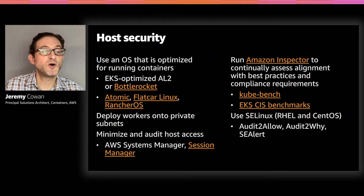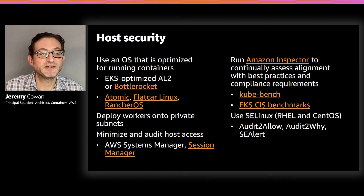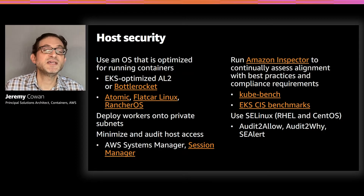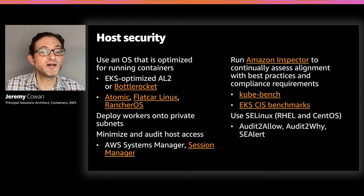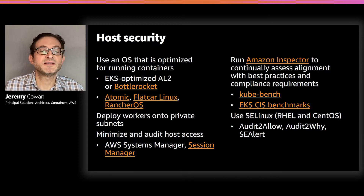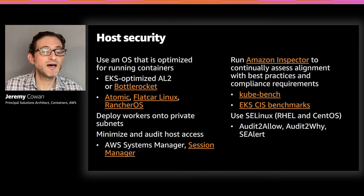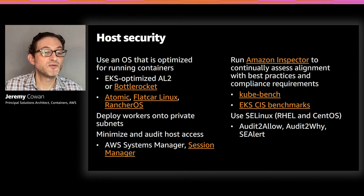Beginning with host security. The first recommendation is to use an operating system optimized for running containers — such as the EKS-optimized AMI or Bottlerocket, or another OS with additional hardening applied to improve your security posture. Bottlerocket is a new open source operating system from Amazon that includes features like DM Verity, a read-only root file system, Secure Boot, and SELinux — all aimed at mitigating threats and improving security. It was inspired by CoreOS and similar operating systems such as Atomic, Flatcar Linux, and Rancher OS, which can also be used with EKS.